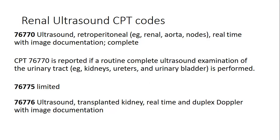Below are the three CPT codes: 76770, 76775, and 76776. These are the renal ultrasound CPT codes majorly used in radiology facilities. 76770 is for ultrasound retroperitoneal, real-time with image documentation — a complete exam. This code should only be reported when a complete routine ultrasound examination of the urinary tract — kidneys, ureters, and urinary bladder — is performed.